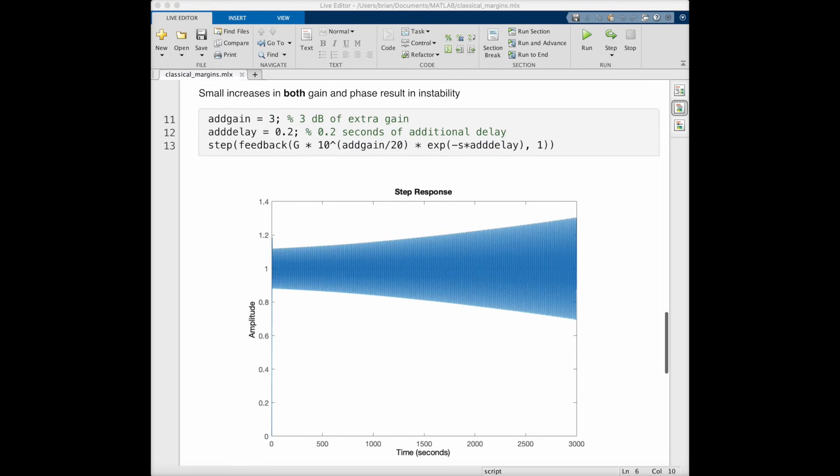However, if we increase both the gain and the phase, then the story is different. Here I'm only adding 3 decibels of gain, and a measly .2 seconds of delay. And this causes the closed loop system to go unstable. So it's not as robust as we were expecting it to be.